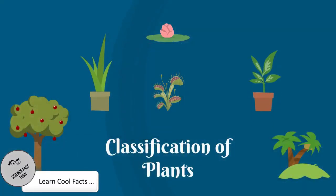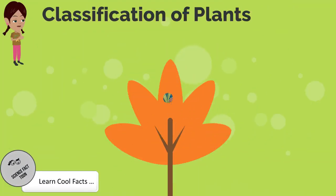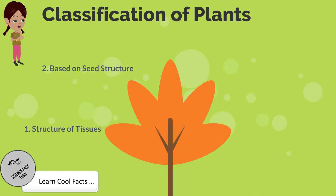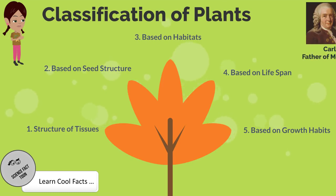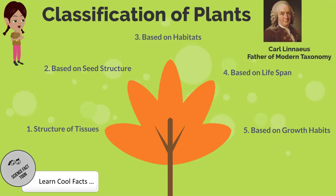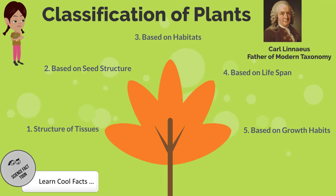Classification of Plants. Plants are classified based on their evolution, tissue structure, seed structure, lifespan, and growth habits of the plants. It was Carl Linnaeus who came up with a classification system. In this video, we will take a look at various classifications of plants.